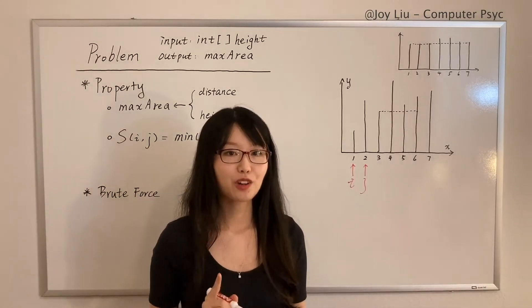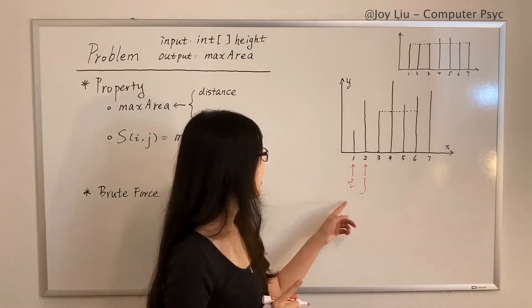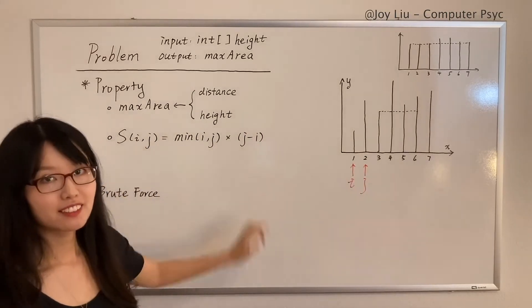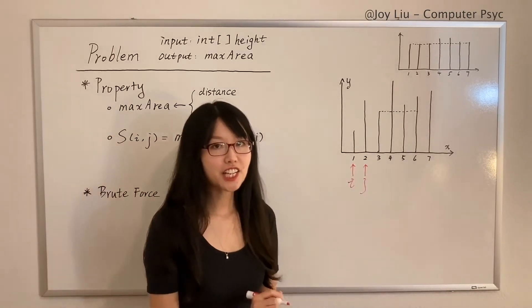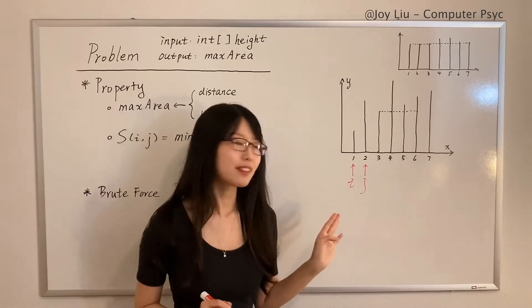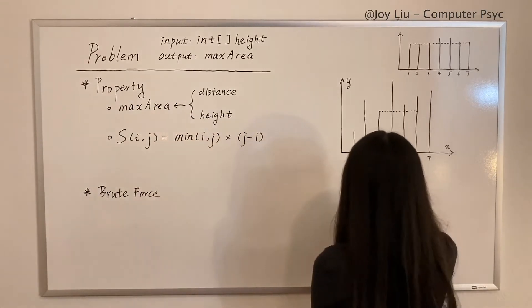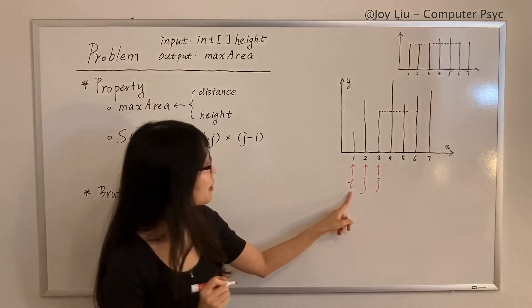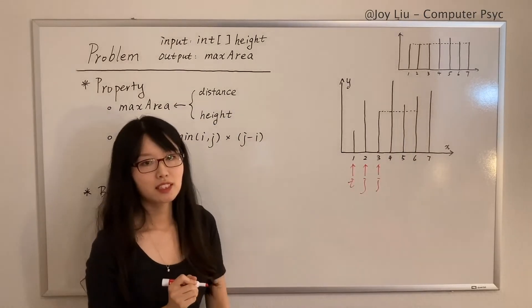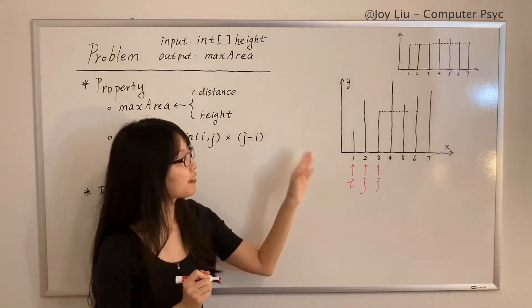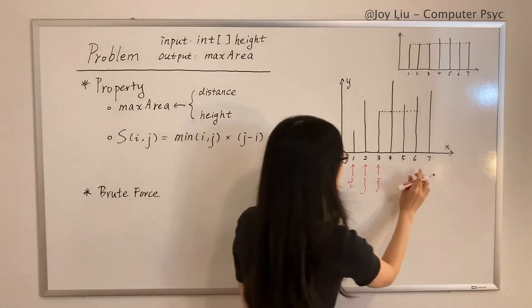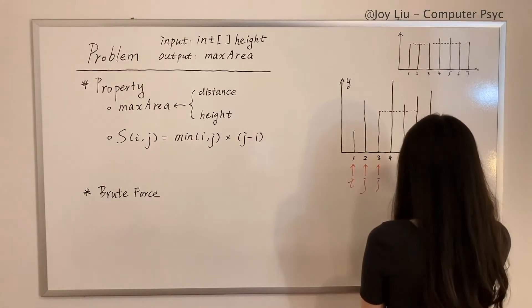And j starts from two. So we can calculate the area of this container (1, 2) by this formula. Then j moves to the next one, which is three, and i keeps in place. And we calculate the area of the next container.